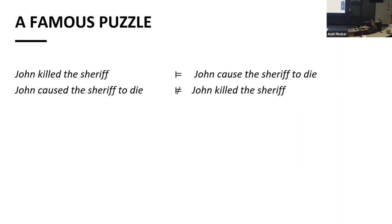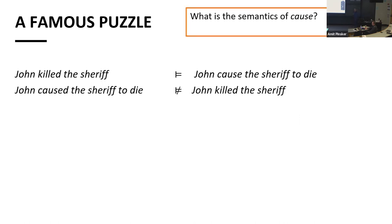On the other hand, the asymmetrical entailment relationship indicates that 'kill' is actually a stronger version of 'cause to die,' because otherwise there wouldn't be this asymmetric relation. The fact that one entails the other indicates that one is a subset of the other. This led us to ask, from the linguistic perspective, what semantics should we assign to the verb 'cause,' and what semantics should we assign to lexical causatives — expressions like 'kill.' This is a famous puzzle that has been in the literature for almost six decades.